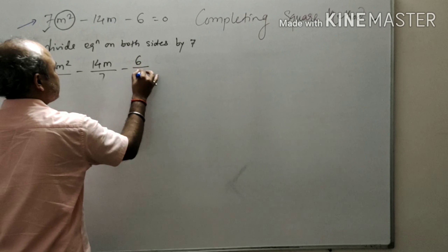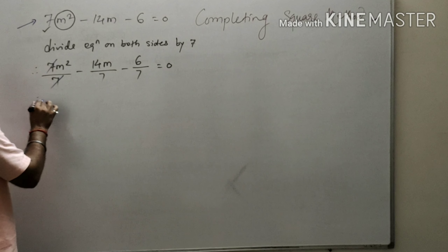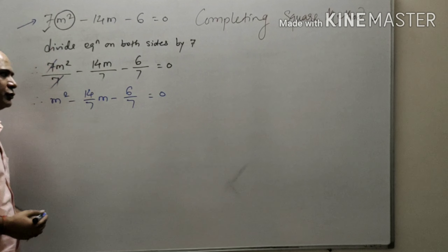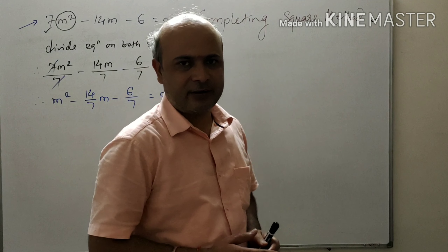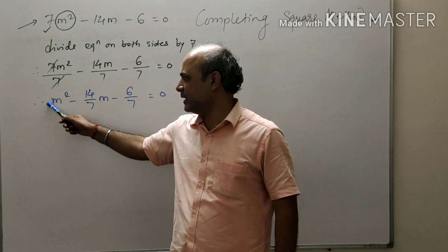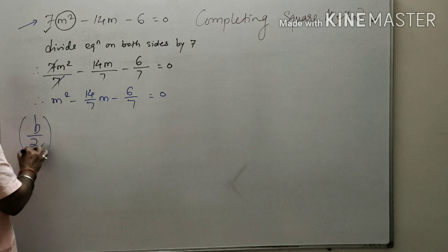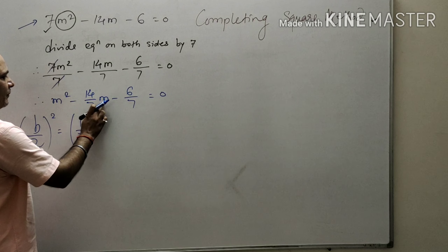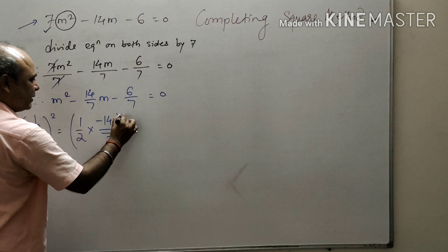First, you will divide the equation by 7, because the coefficient of m² is 7. We want the coefficient of m² to be 1, so we divide the entire equation on both sides by 7. Therefore, 7m²/7 - 14m/7 - 6/7 = 0. Cancelling 7, we get m² - (14/7)m - 6/7 = 0. Now the coefficient of m² is 1.